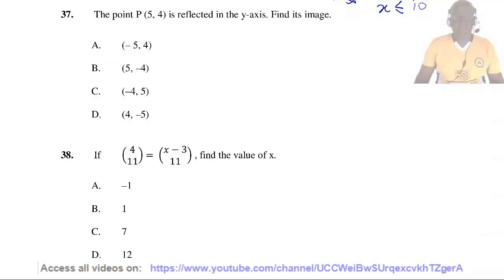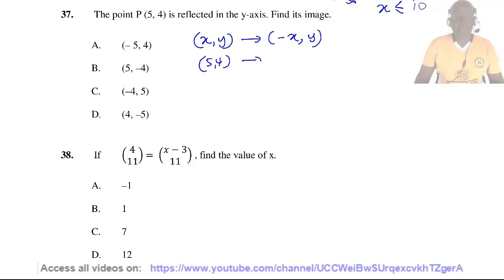Question 37. The point P with coordinates (5, 4) is reflected in the Y-axis; find its image. The rule for reflection in the Y-axis is (x, y) maps to (−x, y). So (5, 4) maps to (−5, 4). The right answer is A.